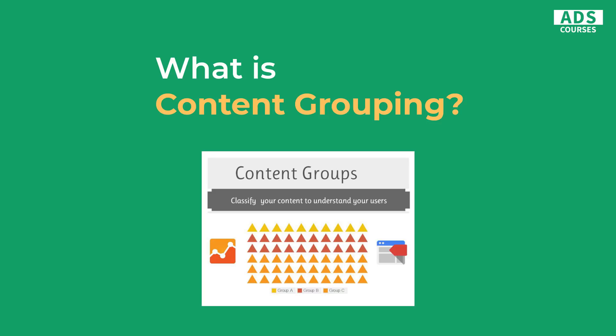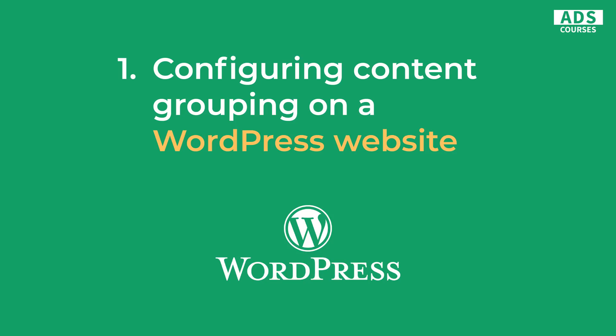You can create content grouping in Google Analytics using URL rules, but this method is not perfect because whenever you change your URL structure, it may crash your content grouping settings. In this tutorial, I will show you how to use data layer to create content grouping so that your implementation will be safe. There are two different methods when it comes to implementing data layer content grouping. If you have a WordPress website, you would want to use a plugin. If you're not using WordPress, you would want to add a data layer script into your website. I will show you these two methods in this tutorial.